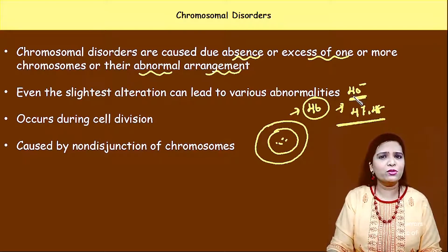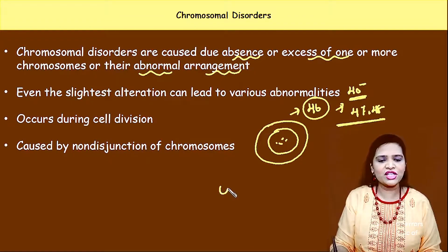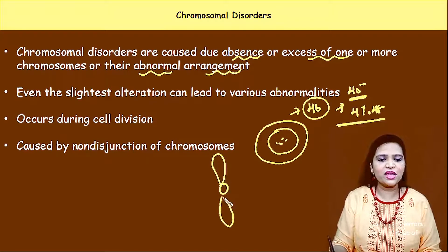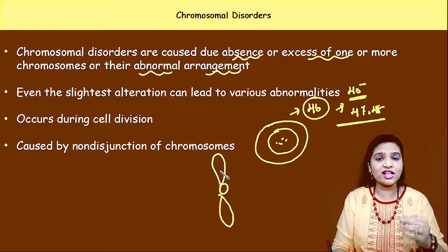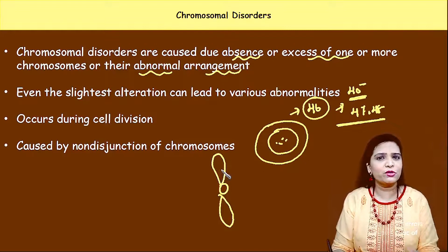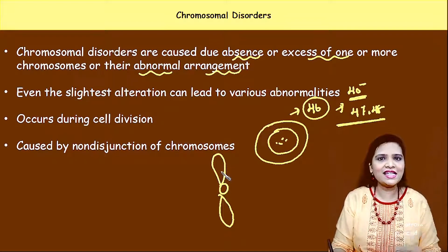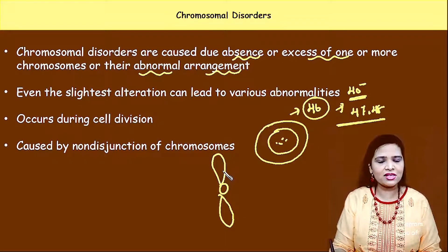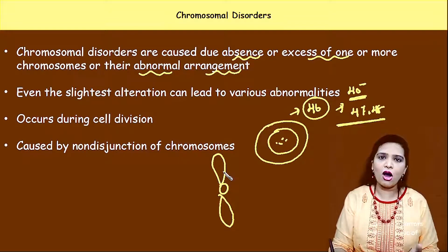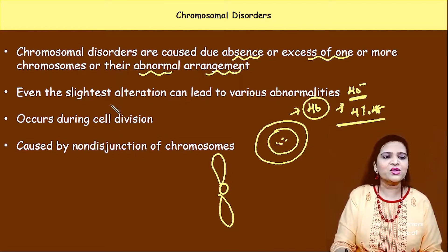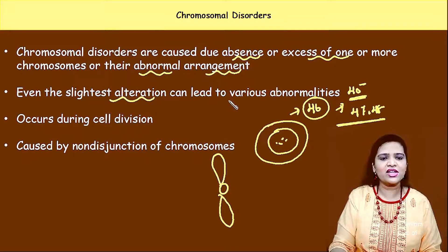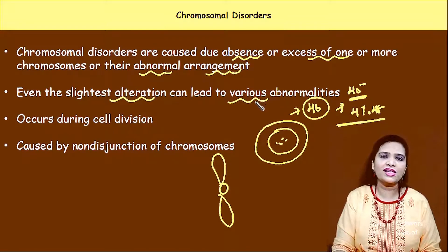Not only the number of the chromosomes — even if the shape of the chromosome is altered, if there is any variation in the shape, structure, arrangement or the number of the chromosome, all these things lead to disorders that we call chromosomal disorders. So chromosomal disorders are caused by errors in the number of the chromosome or in the structure of the chromosomes. Even any slightest alteration in the chromosomal number or its structure leads to chromosomal abnormalities.